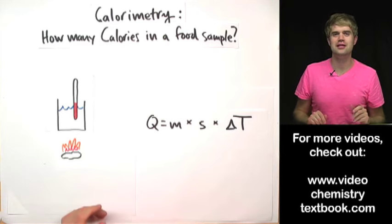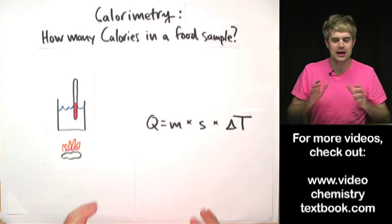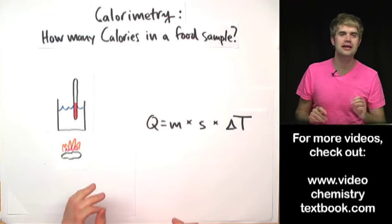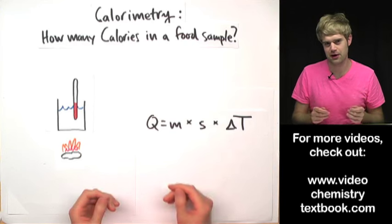Let's talk about a calorimetry activity that you might have done in the lab. Here's how it works. You want to find out how many calories of heat energy are in a food sample, say like a potato chip.